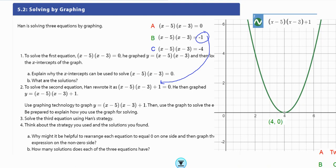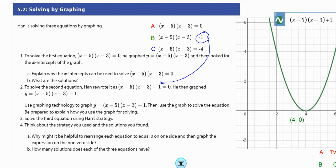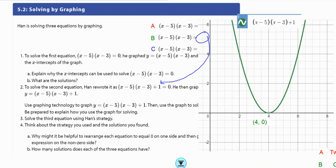Use technology. Then use the graph to solve the equation. Be prepared to explain how you use your graph for solving. So I want to know when does this equation equal 0? When does the y value equal 0? So here, these are our y values. y equals 4, y equals 2, y equals 1, y equals 0. So we can see this graph touches one time when x equals 4. So at x equals 4, that is the solution to that second equation.